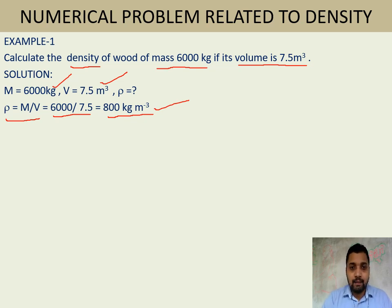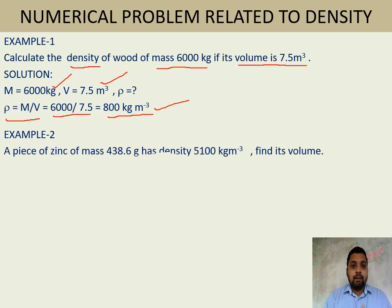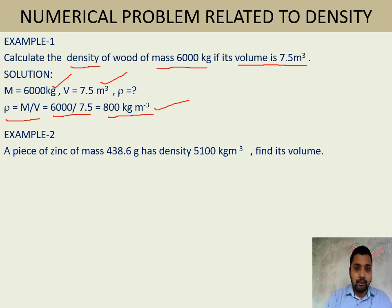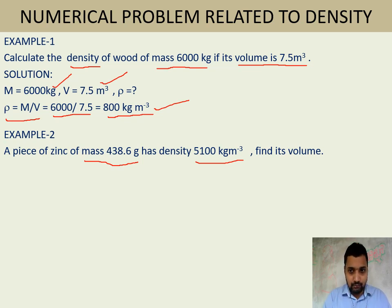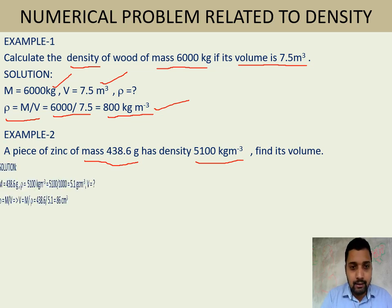Second example: A piece of zinc has mass 438.6 g and density 5100 kg/m³. Find its volume. The data given has mass in grams and density in kg/m³, so the units are mixed. To solve this, we need to either convert grams to kg or convert kg/m³ to g/cm³.